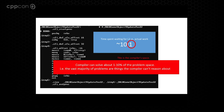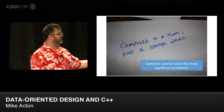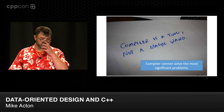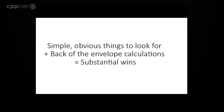So today's subject is really that kind of 90% problem space that we need to solve that the compiler can't — and how we can help the compiler with that 10% it can solve. There are some really simple and obvious things we can look for, and back-of-the-envelope calculations we can do to get substantial wins overall. This is not really complex stuff. We can just look at it and make reasoned judgments up front. And anyone who wants to say 'premature optimization' right now can leave the room — because that is the most abused quote of all time.